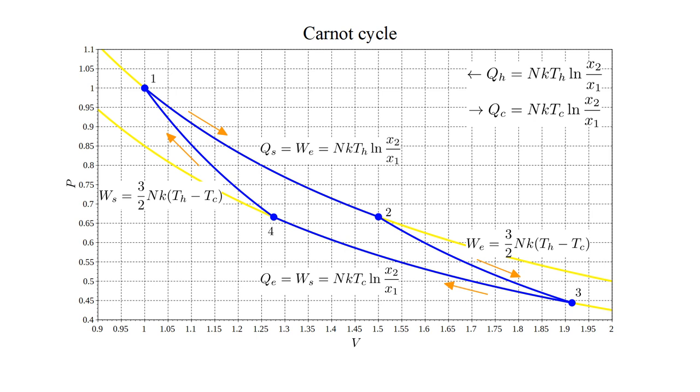In the upper right corner we track the heat extracted from the hot reservoir, Q hot, and the heat delivered to the cold reservoir, Q cold.